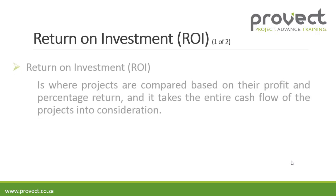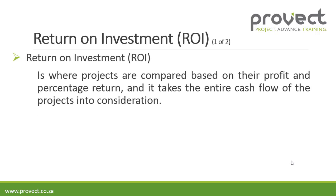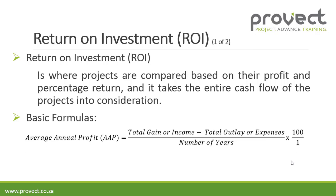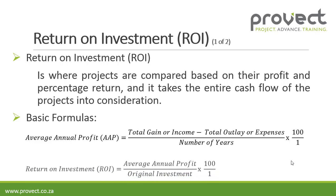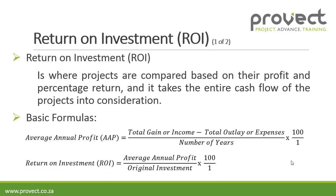Return on investment is where projects are compared based on their profit and percentage return, and it takes the entire cash flow of the project into consideration. The basic formulas are: average annual profit equals total gain (income minus total outlay or expenses) divided by the number of years. The return on investment is then the average annual profit divided by the original investment, and the highest return on investment will be selected.